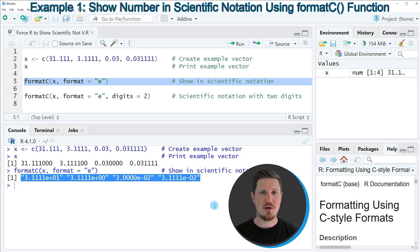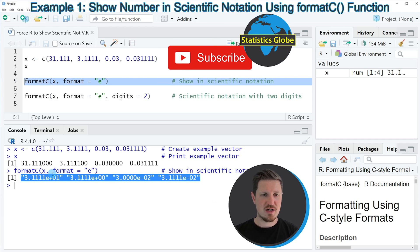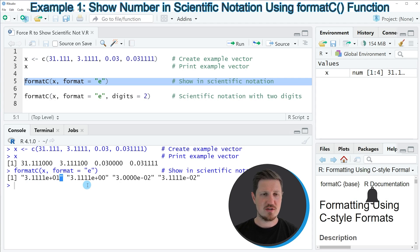However, this time our numbers are shown with scientific notation. You can also see that our vector has been converted to a character string. So please note, if you convert a number to scientific notation, it will be shown as character string.